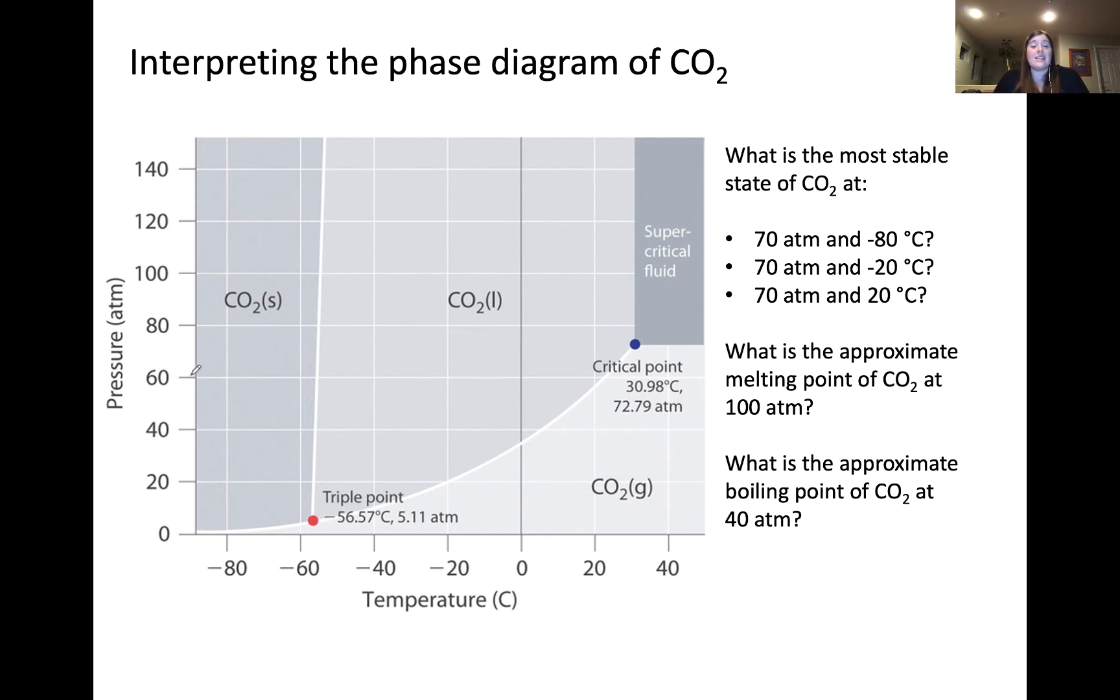So, here we're looking at 70 atmospheres, which is roughly here on the phase diagram. At negative 80 Celsius, that's the point we're looking at, and the most stable phase of the CO2 is a solid. At negative 20 Celsius and 70 atmospheres, the most stable phase of CO2 is a liquid. And then at 20 degrees Celsius and 70 atmospheres, the most stable state is still a liquid because we're still in this region in the middle corresponding to the liquid phase.